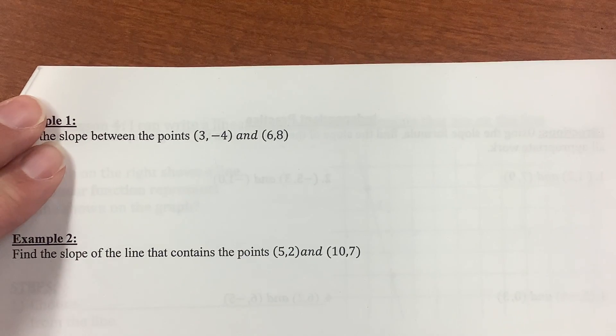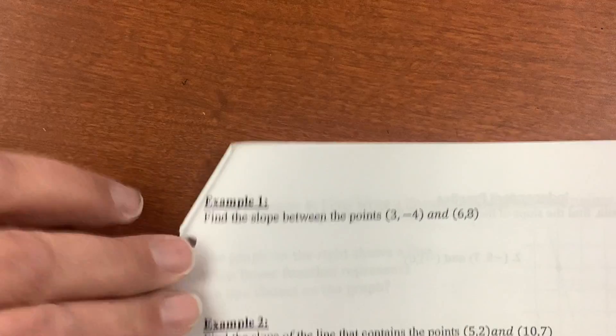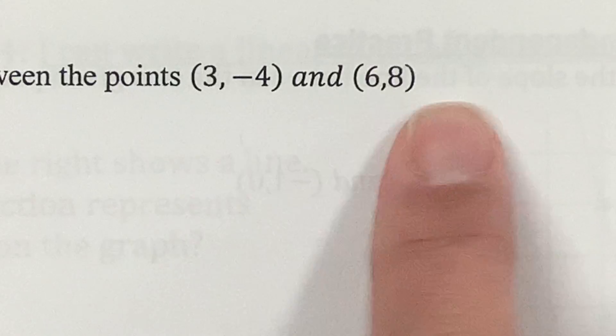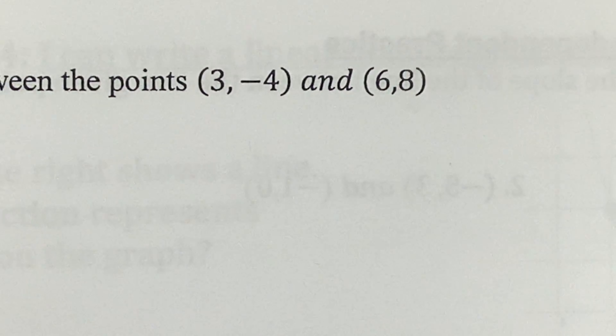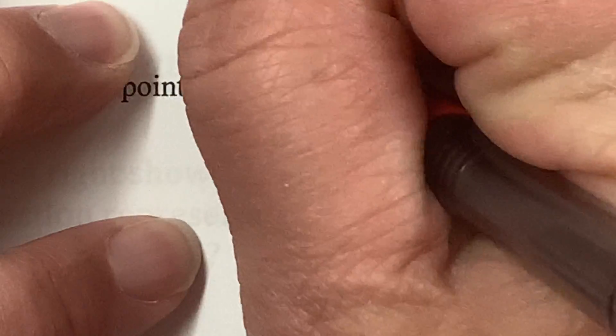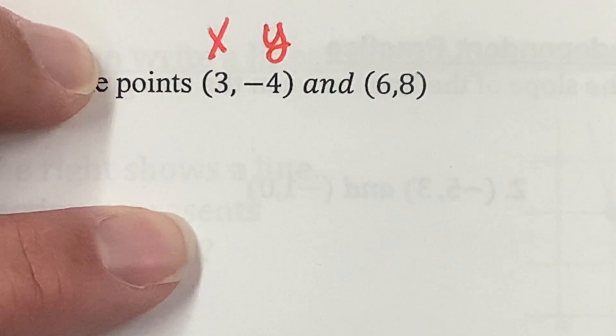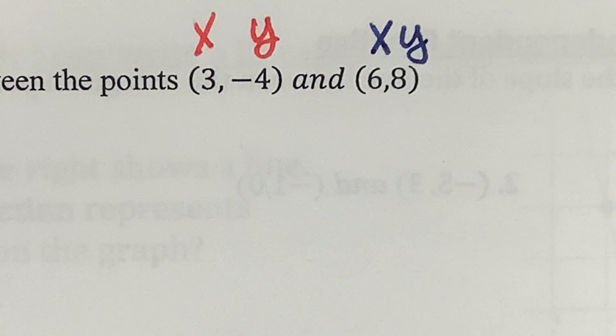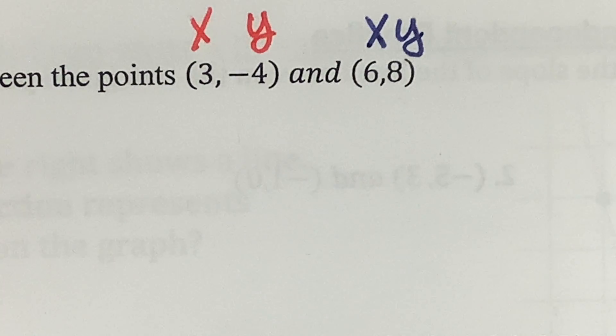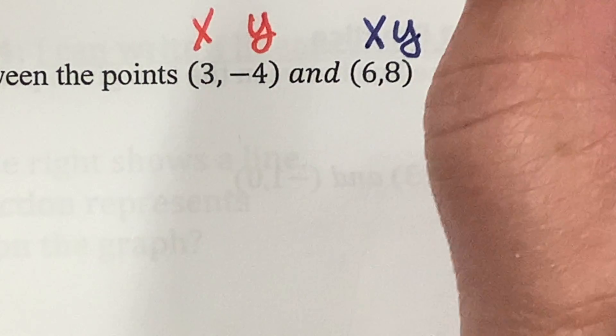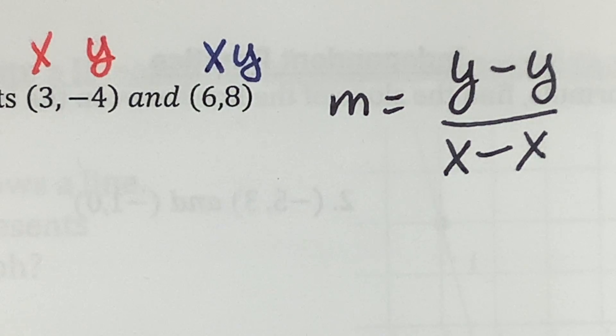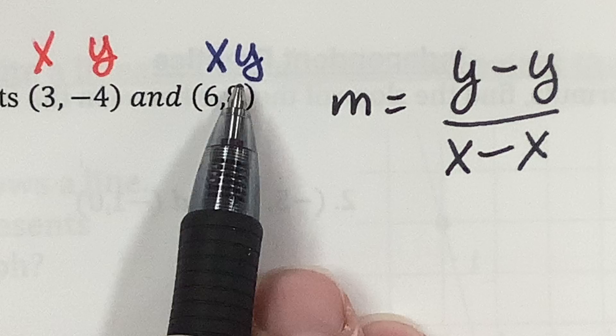So, here's the formula. Let's write that down. Always write the formula first. So, there's my points. I am going to call this first point x and y. And I'm going to call this second point x and y. Now, see how I did them in different colors? That's going to make it a lot easier later on.